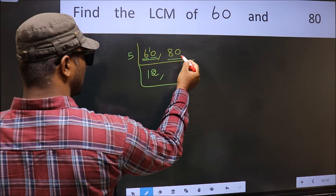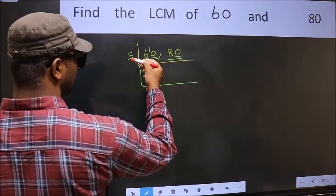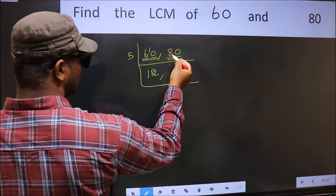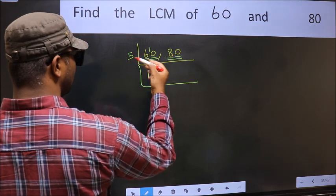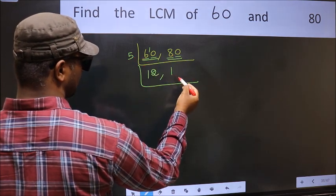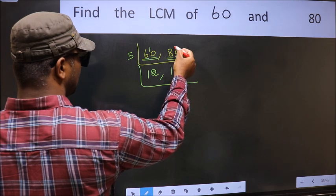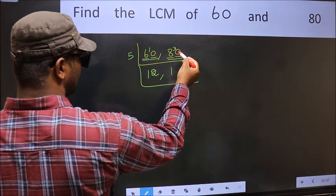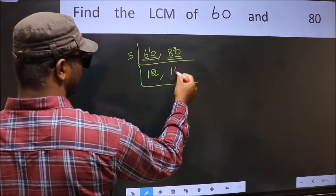The other number 80, last digit 0, so this is divisible by 5. First number 8. A number close to 8 in the 5 table is 5 once 5. 8 minus 5 is 3, 3 carried forward gives 30. When do we get 30 in the 5 table? 5 times 6 is 30.